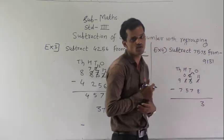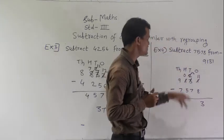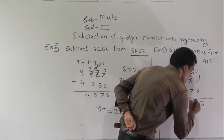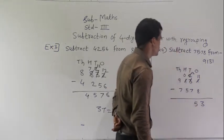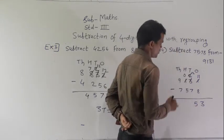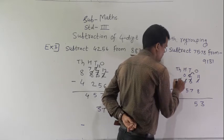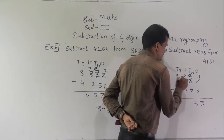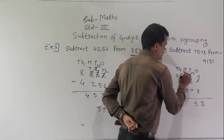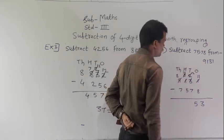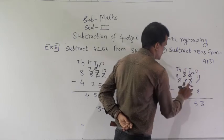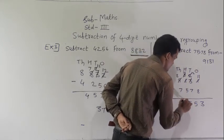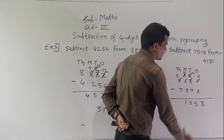12 minus 7 is possible: 12 minus 7 equals 5. Then 0 minus 5 is not possible, so cut this 9 — write 8 here and 10 in the hundreds place. 10 minus 5 equals 5, and 8 minus 7 equals 1.